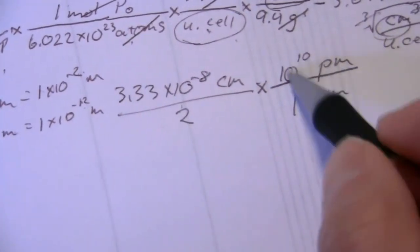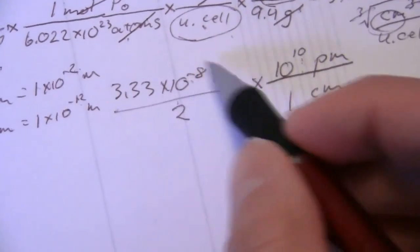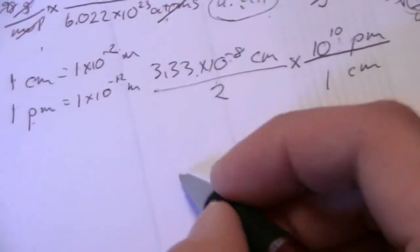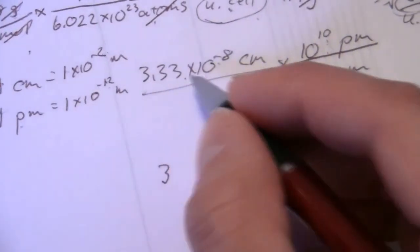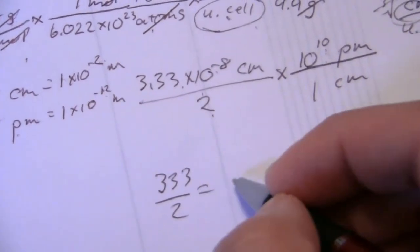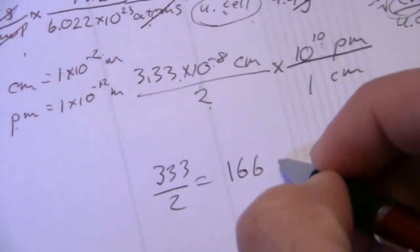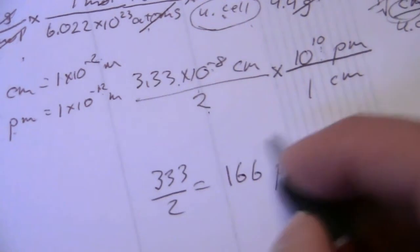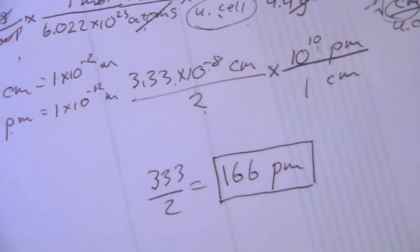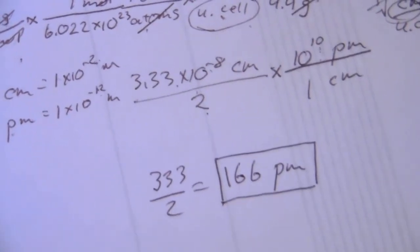And now when I calculate this, I'm going to move the decimal 10 places to the right from here, which is 8 places over. So it'll end up moving it twice to the right. And that'll be 333 divided by 2, of course. So this will be 166 approximately picometers. This is the radius of a polonium atom.